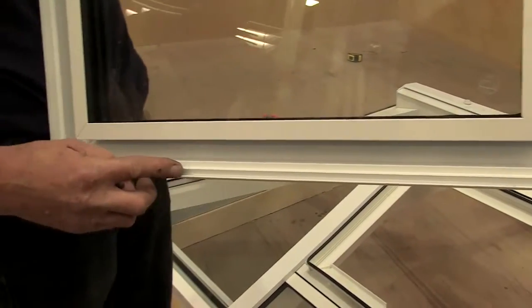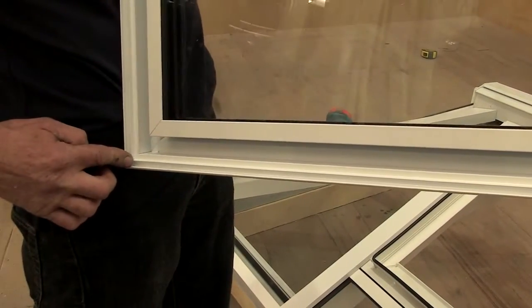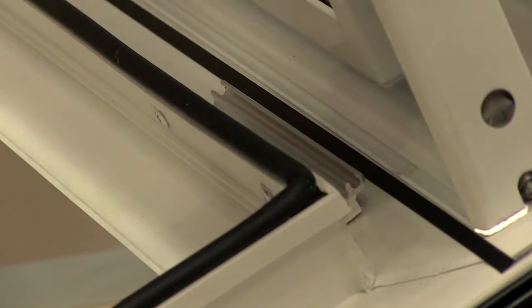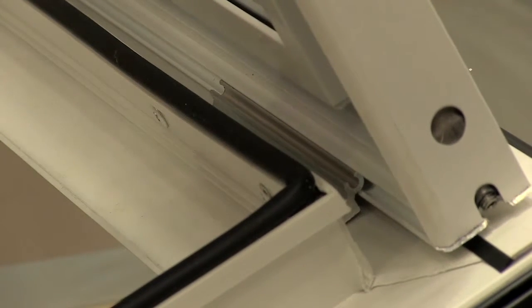When fitting the roof vent sash, locate the sash into position with the integrated hinge channel. The hinge channel fits over the outer frame hinge. The channel locates at approximately 70 degrees in the opening position.